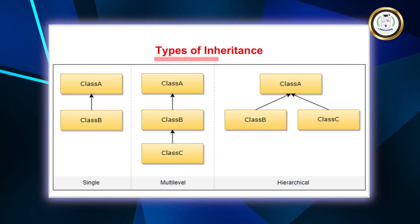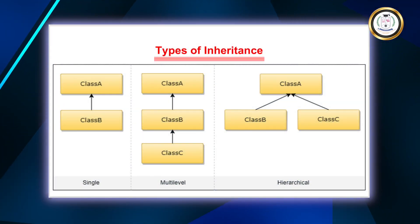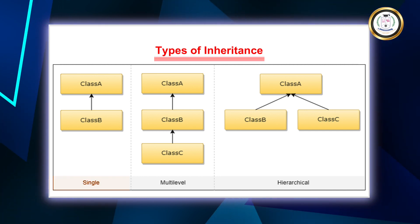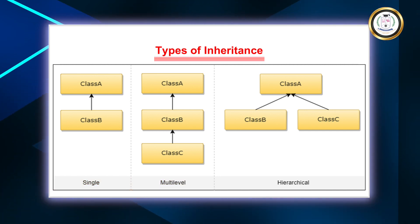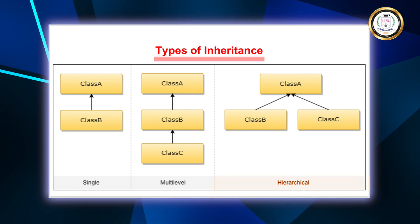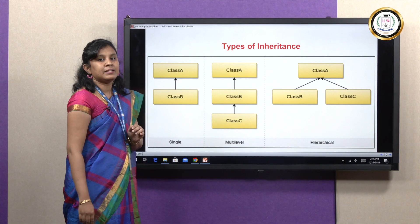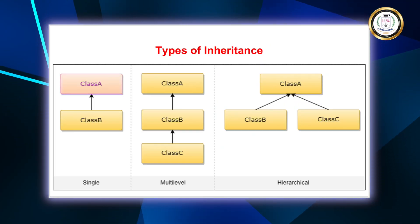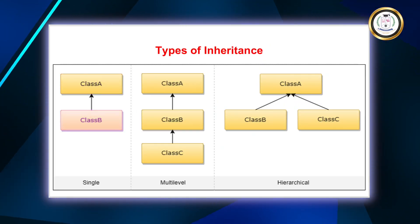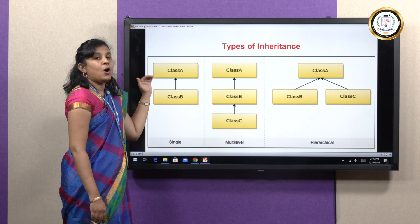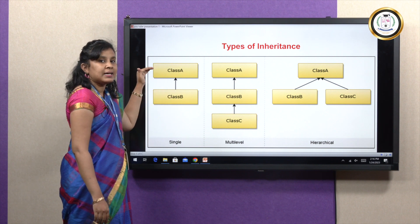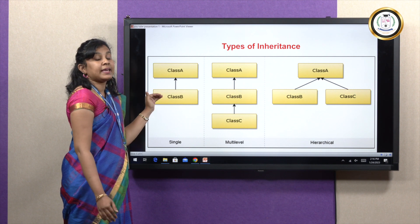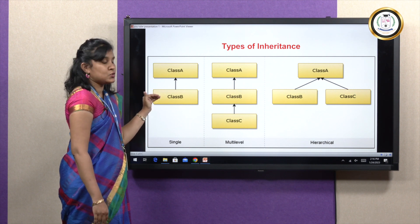Moving on to the types of inheritance, there are basically three types in Java: single inheritance, multi-level inheritance, and hierarchical inheritance. In single inheritance, you have only two classes — the first is the Base Class and the next is the Derived Class. All the properties of the Base Class can be used by the Derived Class, and the Derived Class can have additional properties also.